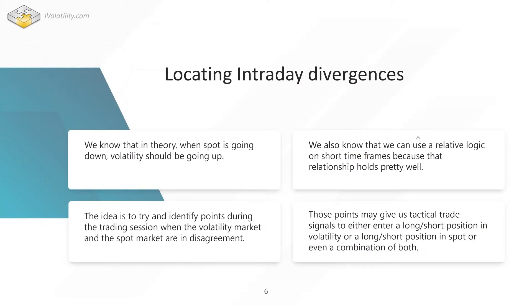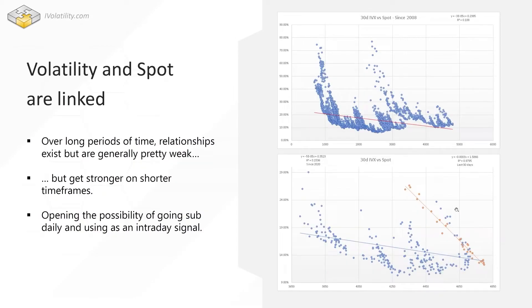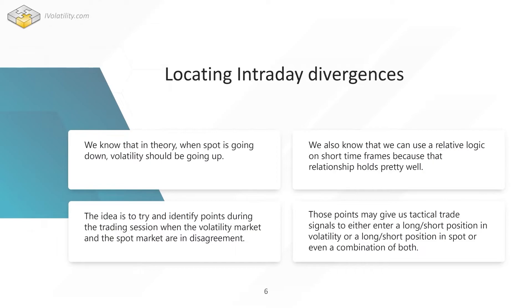Let's get into the actual strategy. We understand from the first chart that whenever spot goes down, volatility generally goes up. Looking at the orange line, as spot moves down, volatility moves up — a pretty strong relationship on short timeframes. We can use a relative logic on short timeframes because that relationship holds well. What I call a relative logic is basically using an anchoring point. For example, if volatility was 27 at the open and the NASDAQ was at 14,500, and two hours later NASDAQ is still at 14,500 but volatility is 23, we know volatility has gone down four points while spot hasn't moved — something is happening in the vol market.